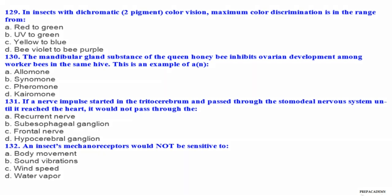Question 129. In insects with dichromatic (2 pigment) color vision, maximum color discrimination is in the range from: A red to green, B UV to green, C yellow to blue, D violet to purple. Question 130. The mandibular gland substance of the queen honey bee inhibits ovarian development among worker bees in the same hive. This is an example of: A allomone, B kairomone, C pheromone, D kairomone.